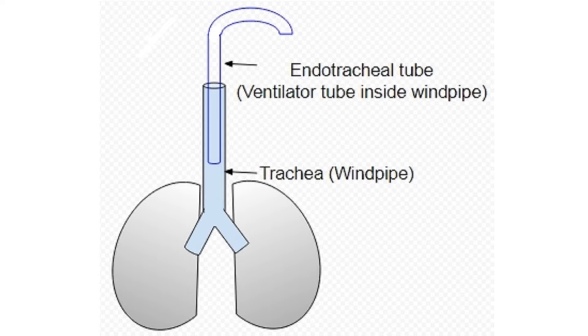Capnography is useful after endotracheal intubation — putting a tube in the windpipe — to confirm the position of the tube in the trachea, and is used routinely in most modern centres in the emergency department.